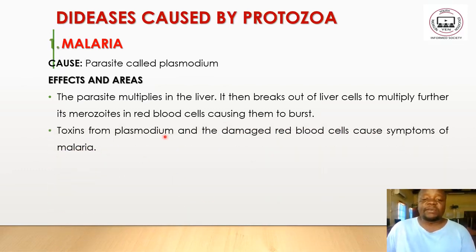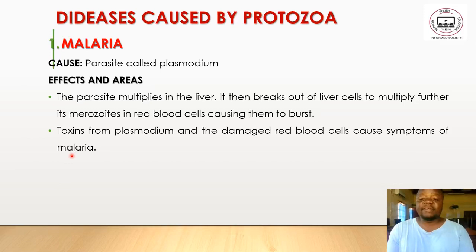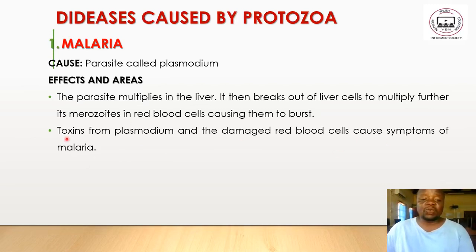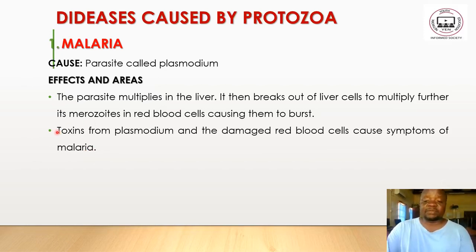Toxins from plasmodium and the damaged red blood cells cause symptoms of malaria. Because plasmodium is a living thing, it excretes toxins into the bloodstream, which cause damage and produce the symptoms of malaria. These toxins are the poisons excreted by the parasite plasmodium.